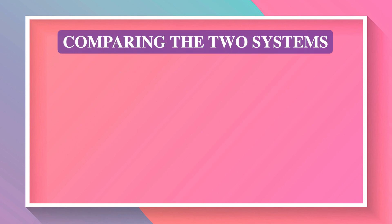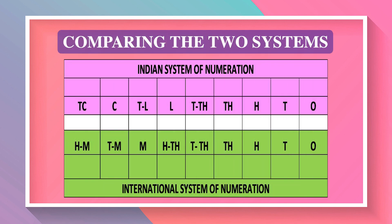When we compare the Indian and international system of numeration, we see that both systems share 1s, 10s, 100s, 1000s, and 10,000. One lakh in the Indian system is equivalent to 1,00,000 in the international system. Ten lakh is equivalent to one million, and one crore is equivalent to 10 million. Whenever we jump from left to right, each time we multiply by 10.